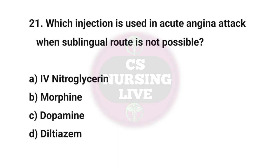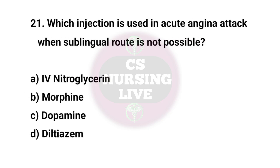Question No. 21. Which injection is used in acute angina attack when sublingual route is not possible? Right answer is A. IV nitroglycerin.